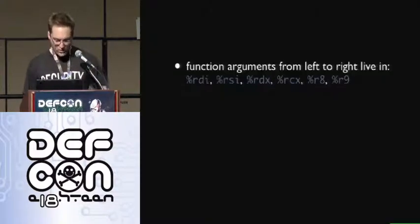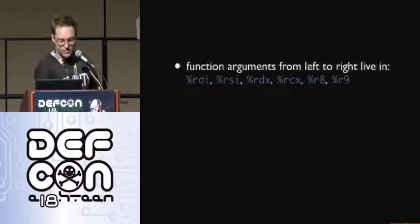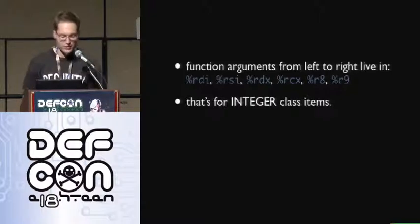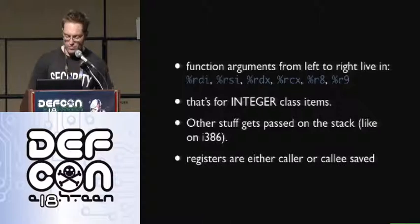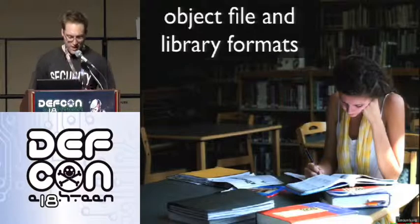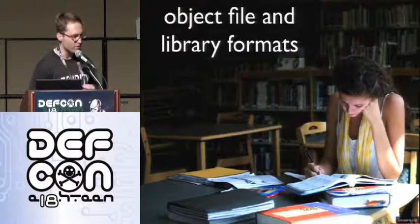We also need to care about calling convention. For calling convention, all we really care about is that function arguments live in registers left to right. So the first argument is in RDI, second is in RSI, and so on — but that's only for integer class items. Other stuff gets passed on the stack, similar to the way arguments get passed on i386. Registers are either caller or callee saved. And that's all we pretty much need to know about calling convention to make binary patching work later.